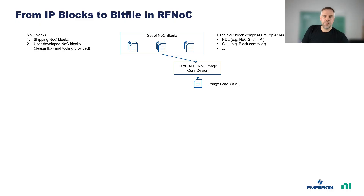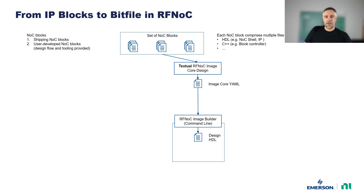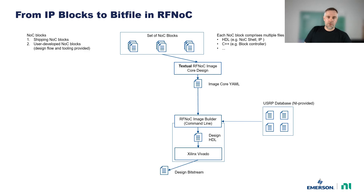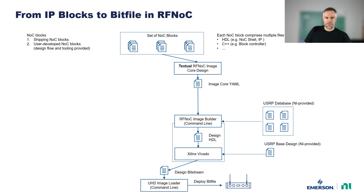In the text-based design flow, we edit the YAML file that describes the RFNOC image core contents in a text editor. The image core YAML file is then input to the RFNOC image builder tool. This tool uses additional NI-provided files to create the HDL code of the FPGA design. The HDL code is then synthesized into a bitstream through Xilinx Vivado, again including NI-provided base design files. Note that the user interacts with Vivado through the RFNOC image builder, but not directly. Finally, the bitstream can be deployed on the USRP through a tool called UHD image loader.